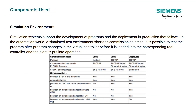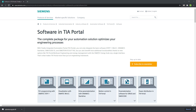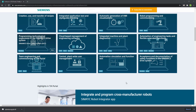One thing to note for this application example are the components used in the simulation environments. Simulation systems support the development of programs and deployment in production that follows. In the automation world, a simulated test environment shortens the commissioning times. It is possible to test the program after program changes in the virtual controller before it is loaded into the corresponding real controller and the plant is put into operation. What I would like for you to notice is the communication options available when you are using PLC SIM Advanced.